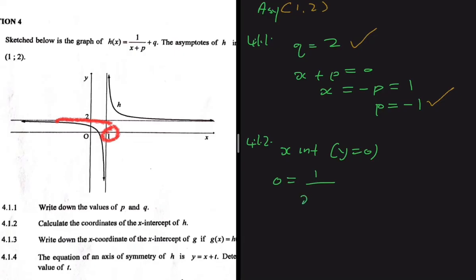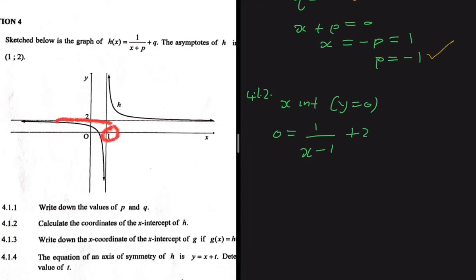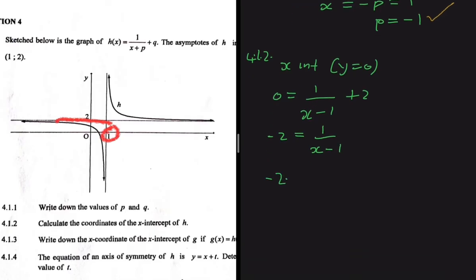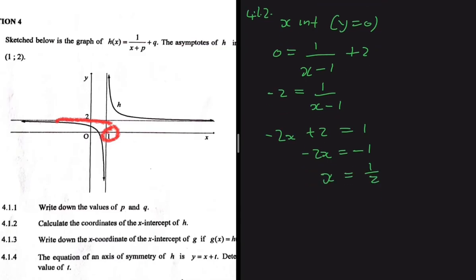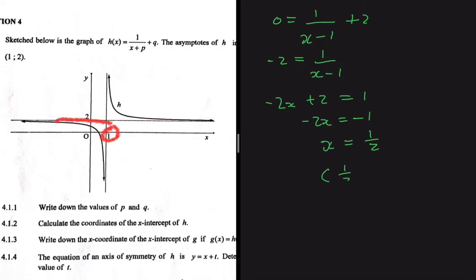Setting h(x) = 0 gives 0 = 1/(x - 1) + 2. Taking 2 to the other side: -2 = 1/(x - 1), so -2x + 2 = 1, then -2x = -1, giving x = 1/2. The x-intercept coordinate is (1/2, 0).